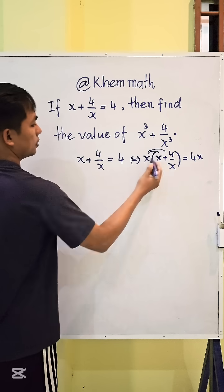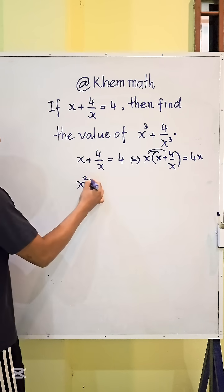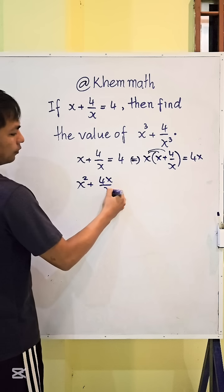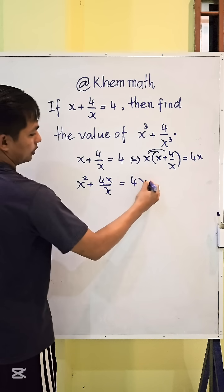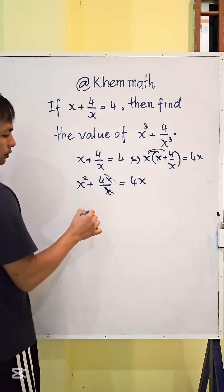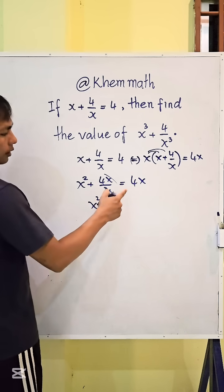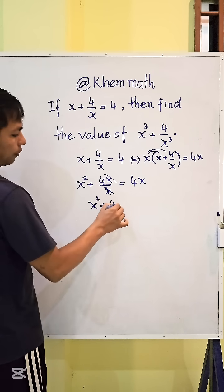And we expand this. We get x squared plus 4 equals 4x. And we simplify it.